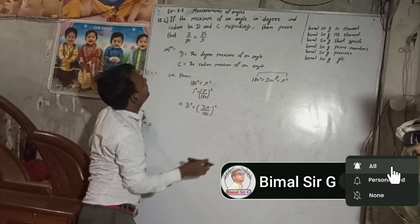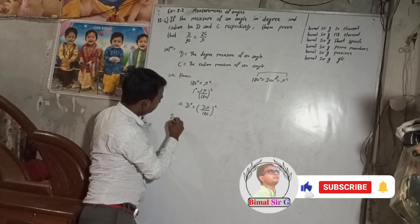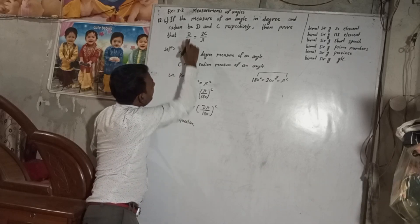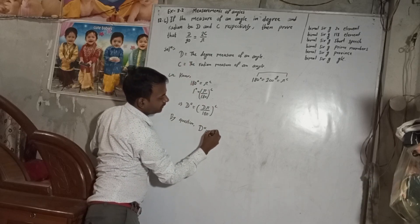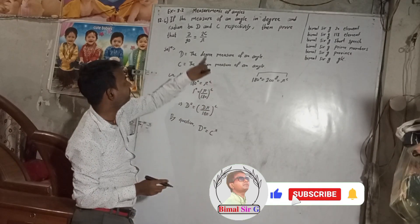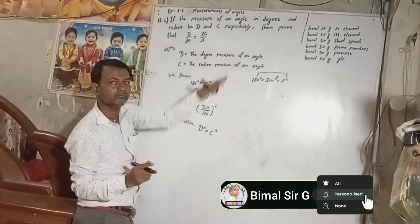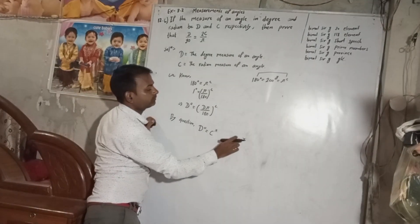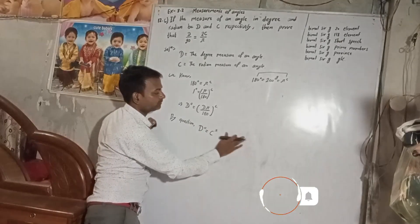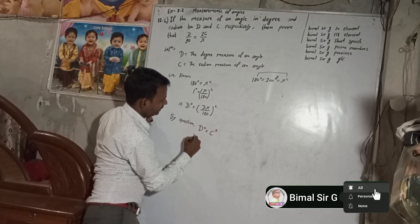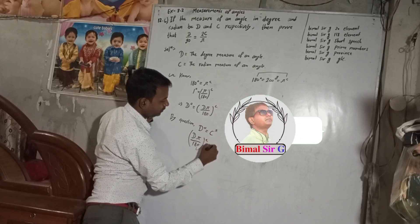Now by the question, if the measure of an angle is D degrees and C radians, we can say D degrees is equal to C radian — because it is the same angle, just expressed in both degree and radian. So we substitute: D times Pi by 180 radian is equal to C radian.